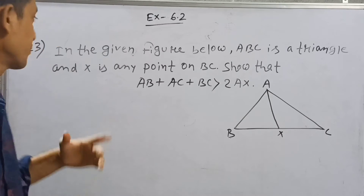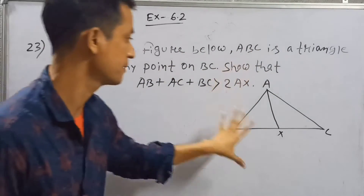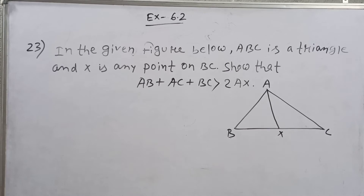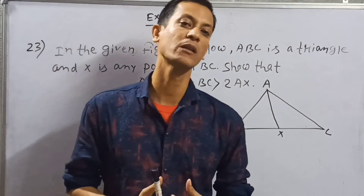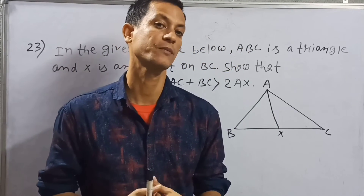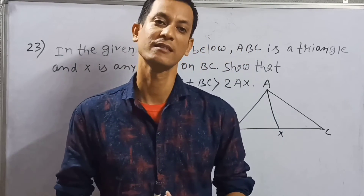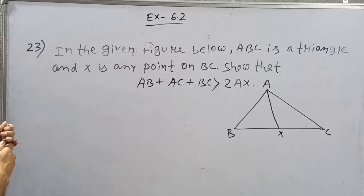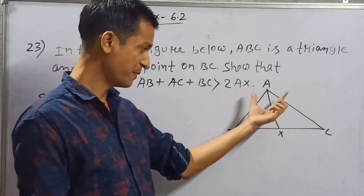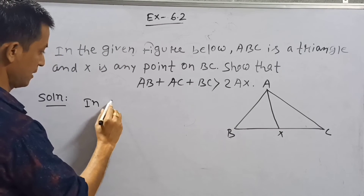Question number 23: In the given figure, ABC is a triangle and X is any point on BC. Please subscribe to my channel if you haven't already and you like my videos. Solution: Line AX divides triangle ABC into two parts: triangle AXB and triangle AXC.